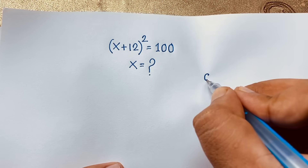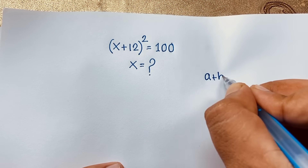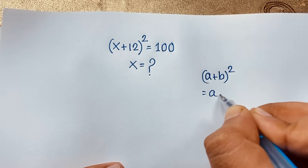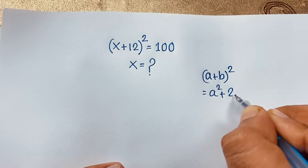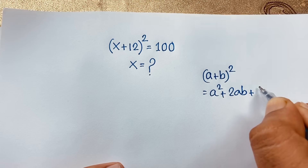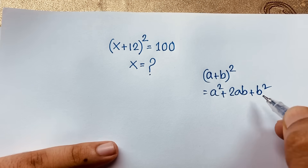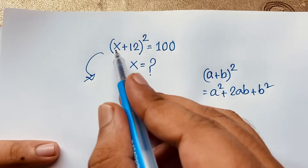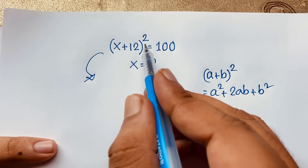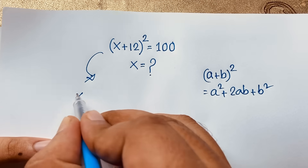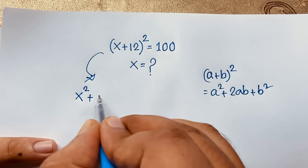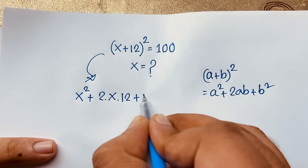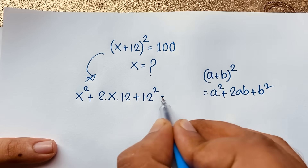We are solving this question using the formula (a + b)² = a² + 2ab + b². We are applying this math formula here. So in this expression, a is equal to x and b is equal to 12. So it will be x² + 2ab + b² = 100.